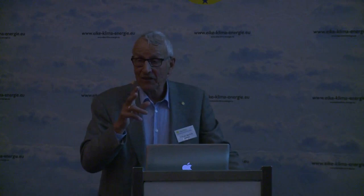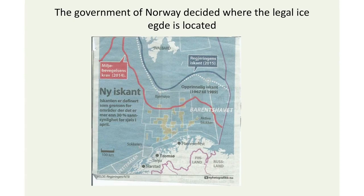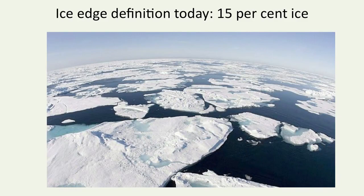The ice edge is also a juridical question. That's where we are allowed, or not — whether the oil people are allowed to drill for oil. Here is the edge in the Barents Sea. The white one is the original edge defined by the government. The blue one is a new one proposed, and the red one is where the green people want to have the ice edge defined. And you see if they win the discussion, many of the oil fields are inside the ice edge. So this is a very political question, to drill for oil in the north.